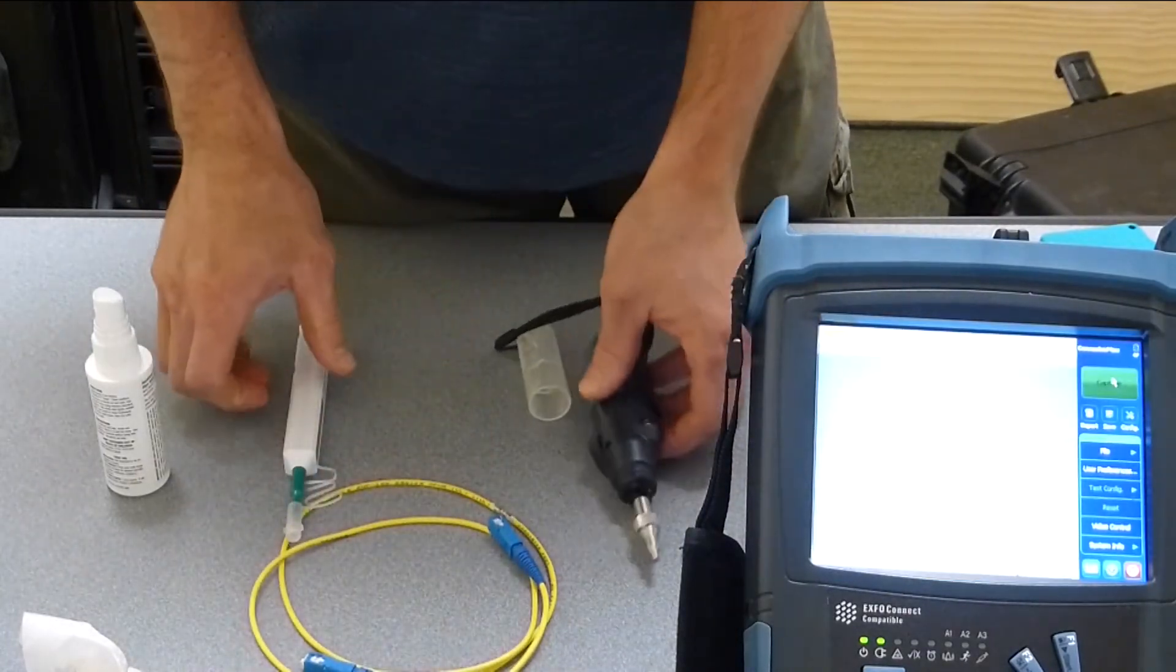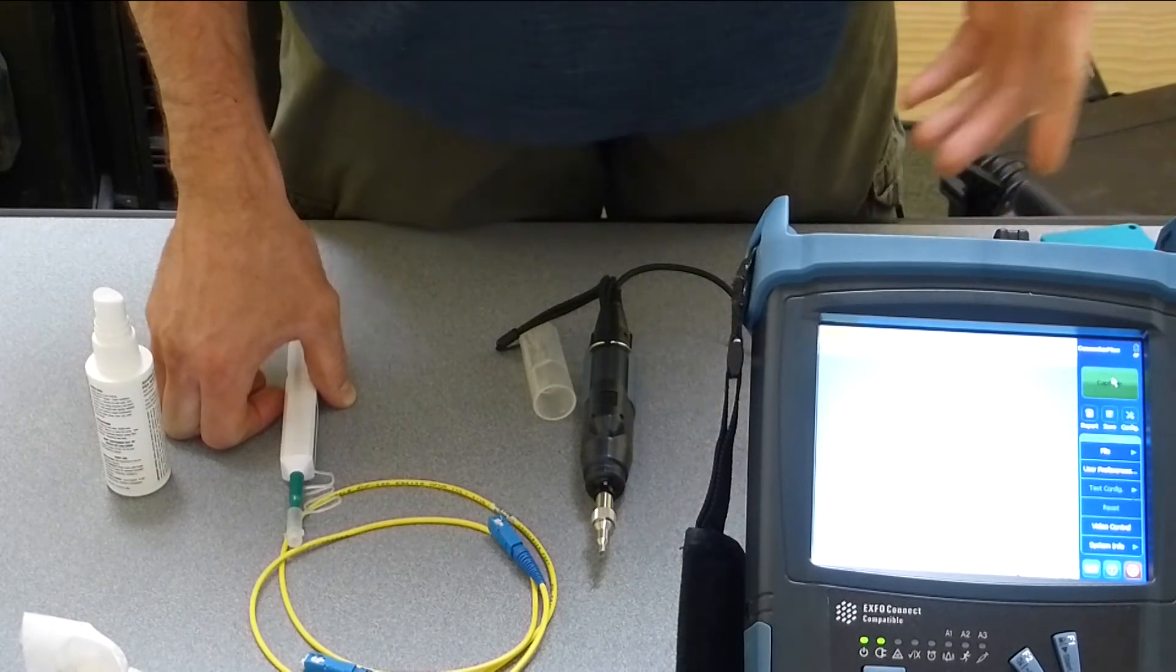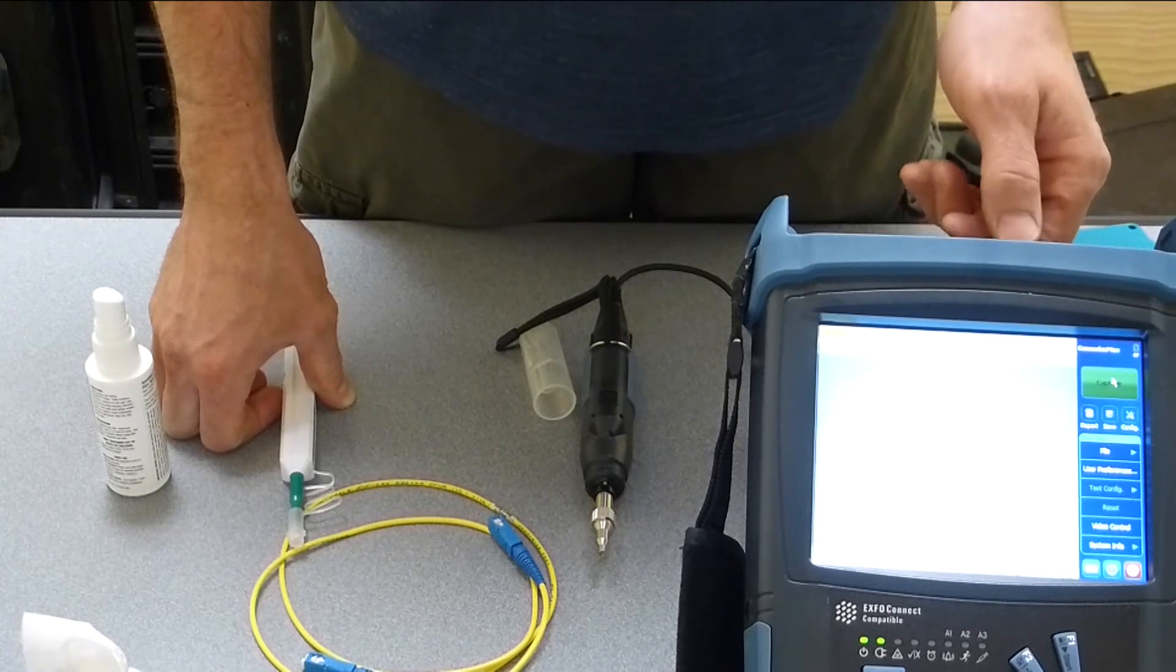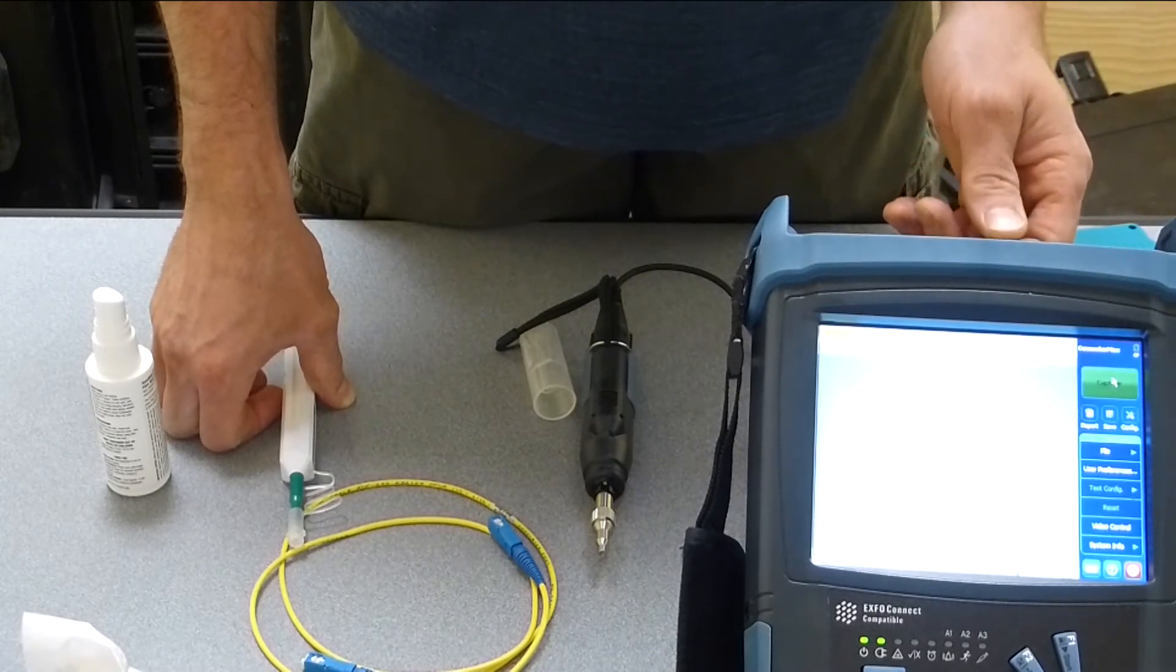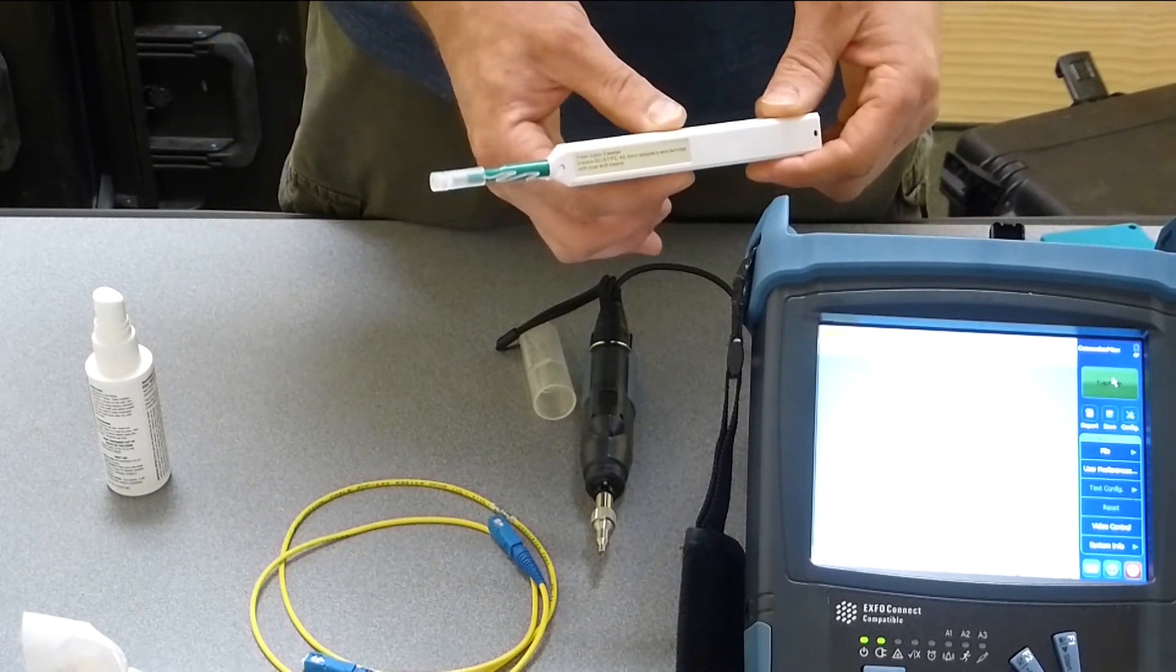Another place that people really forget to clean is their OTDR port. And the OTDR port is really important that it stays clean because with a damaged connector or bad transmission, we're going to get inaccurate test results. So today we'll talk about using the one click cleaners.